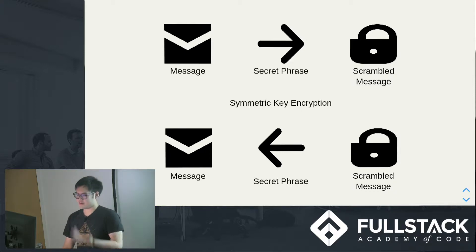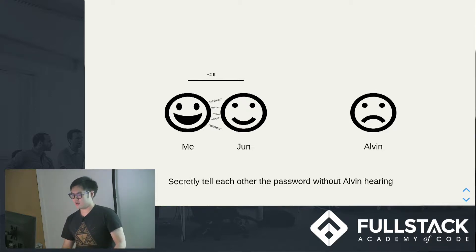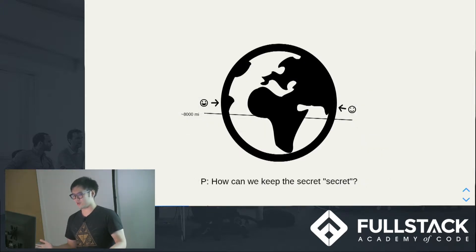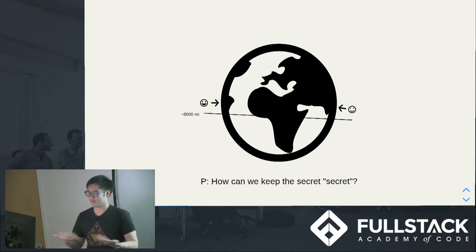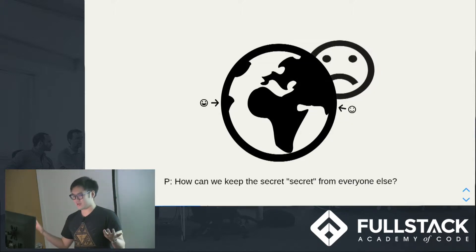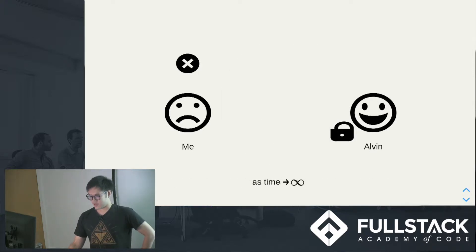So, figuring out the system, I tell June my system and Alvin's not going to listen. Now we can send messages to each other without worrying about Alvin figuring out our message. We whisper it to each other — not a big deal when we're next to each other. But it becomes a big deal when you're across the world, because now I have to send him my secret key through the same means — it's the original problem. Alvin's everywhere, so we can't send the secret key through phone or Slack or anything. Eventually he's going to get his hands on it.